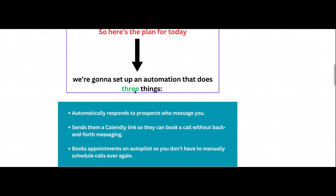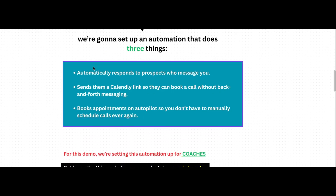We're pretty much going to set up an automation that does three things. One, it automatically responds to prospects who message you. It sends them a Calendly link so you can book a call with them without the back and forth messaging and without you actually getting involved in the conversation manually. And finally, it accomplishes the main task of getting the prospect or lead to book an appointment with you and pretty much fill up your calendar while you actually focus on your business operations.